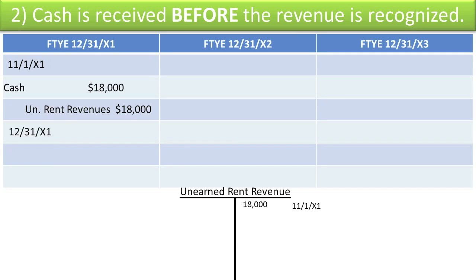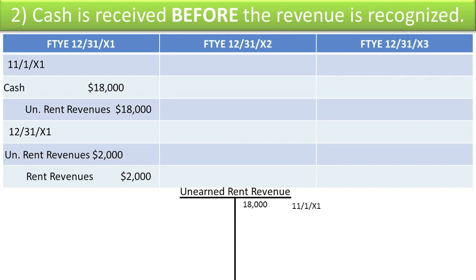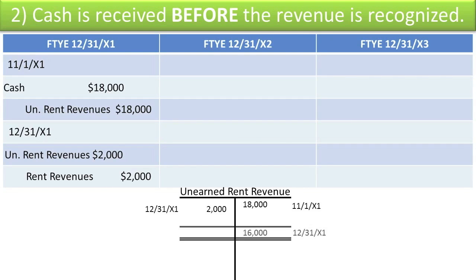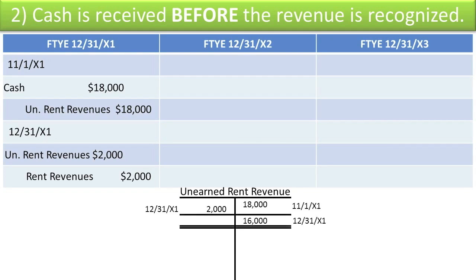We then have to jump to the end of the year and ask: have we earned any of this unearned rent revenue? The answer is yes — we've earned two months' worth. So we would have to reduce that liability by $2,000 and record rent revenue of $2,000. Let's post the debit to unearned rent revenues of $2,000, thus arriving at $16,000 of rental services that we still owe our tenant.